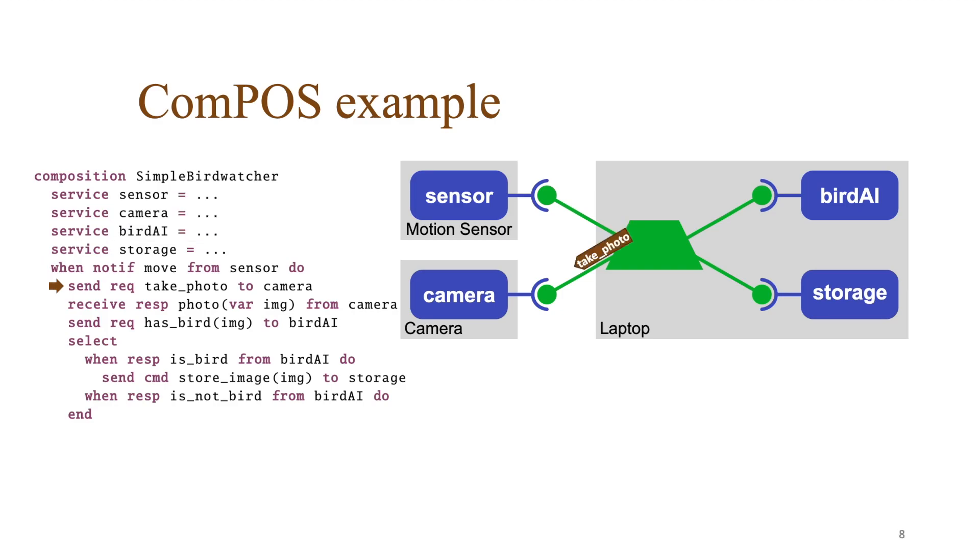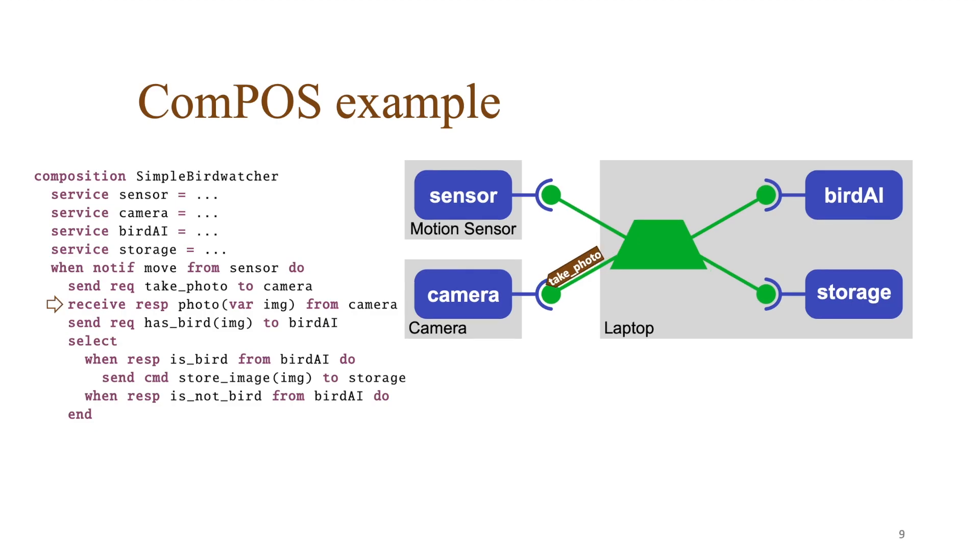The next step is that the composition sends a take photo message to the camera. Then the composition waits for a response. The response arrives and the composition stores the photo in the IMG variable, then continues to execute the composition.